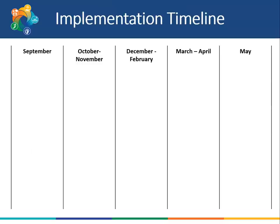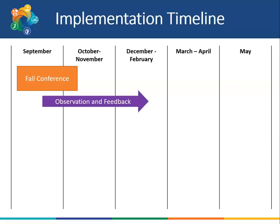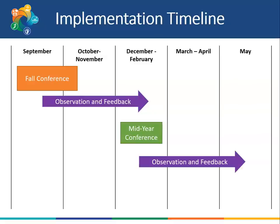The following is an implementation timeline for the pilot of the Delaware Teacher Growth and Support System. Your district may have specific deadlines for each step to be completed. Fall Conferences will begin in September, and all should be complete by the middle of October. As soon as the Fall Conference is complete, observations can begin, with Mid-Year Conferences occurring between December and February once at least two observations are completed. Observations continue into the Spring, with the Spring Summative Evaluation Conference being complete by the middle of May.